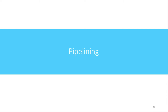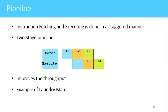Welcome. In this video we'll see the concept of pipelining that is implemented in PIC16F877 microcontroller. In pipelining, instruction fetching and executing is done in a staggered manner. In the PIC16F877 microcontroller there are two stages of pipeline: the first stage is called the fetch stage and the second stage is called the execute stage.